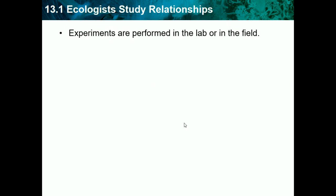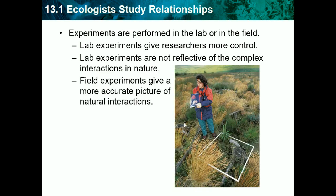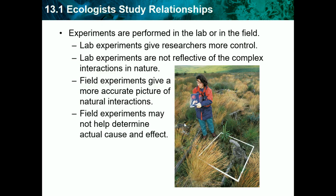Experiments are performed in a lab or in the field. Lab experiments give researchers more control — they can control everything that happens — but they are not reflective of the complex interactions in nature. For example, you wouldn't think about simulating weather for a soil type experiment, but in nature this happens and it changes the effect a lot. Field experiments give a more accurate picture of nature's interactions, giving you all the things you get in nature with some control, though they may not help determine actual causes and effects.